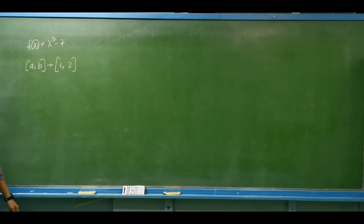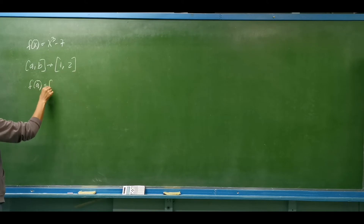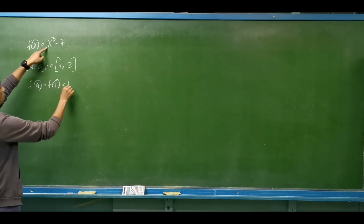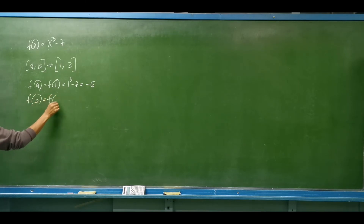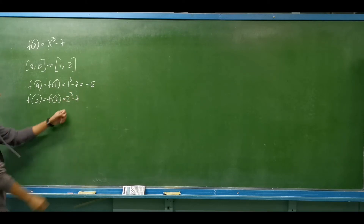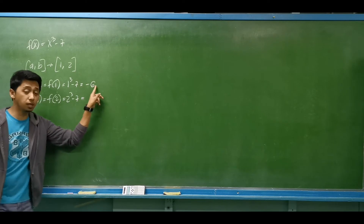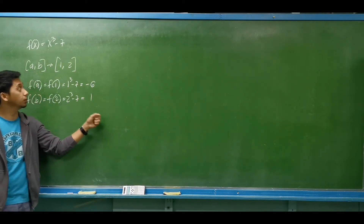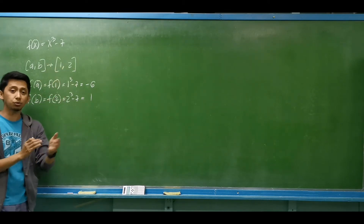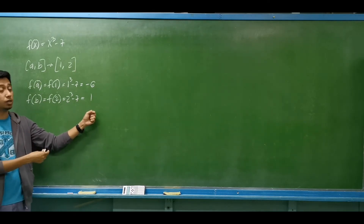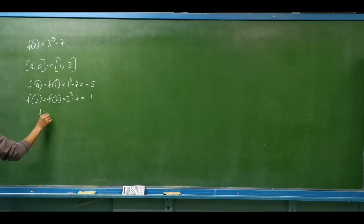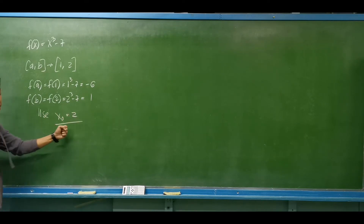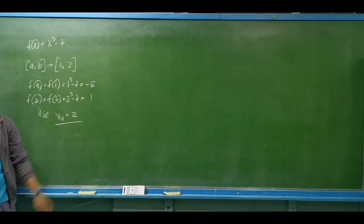One root of this function is somewhere between 1 and 2. How do we know? We check for a change in sign. f at a, which is f at 1, equals 1 cubed minus 7, which is negative 6. What about f at b? That is f at 2, equal to 2 cubed minus 7. 2 cubed is 8, minus 7 equals positive 1. So we have a change in sign from negative to positive. Therefore, we can conclude the root is somewhere between 1 and 2. We will use x sub 0 equal to 2 as our initial guess.